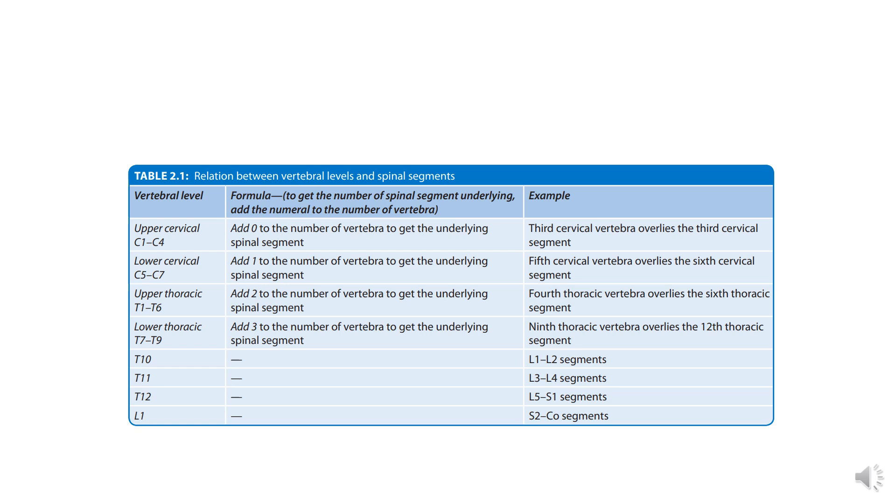The spinal cord ends at the lower level, lower border of the L1 vertebrae. So the spinal level and the vertebral level differs. So in order to get the number of spinal segment against the vertebral column, we add different numbers in different regions.